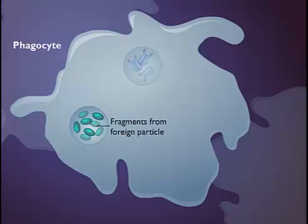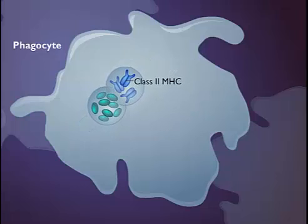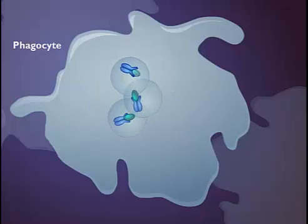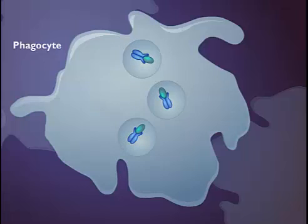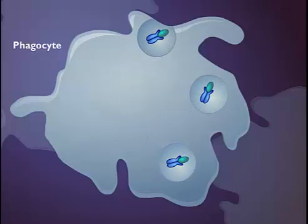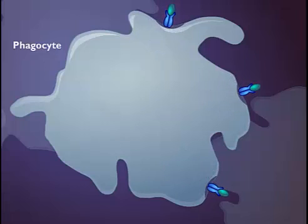The vesicle containing the foreign fragments fuses with vesicles from the Golgi apparatus containing the class 2 MHCs and the two structures combine. The MHC class 2 antigen complex is transported to the plasma membrane. The displayed MHC class 2 antigen complex can stimulate other immune system cells to respond to the antigen.